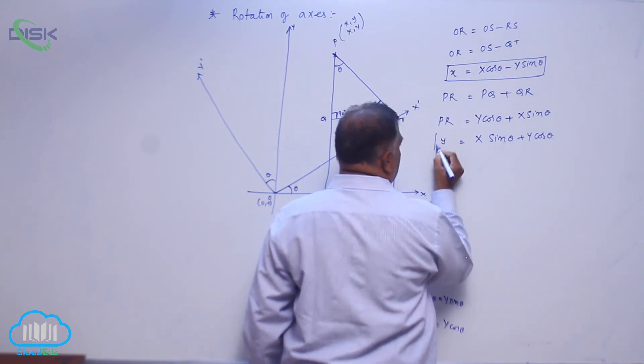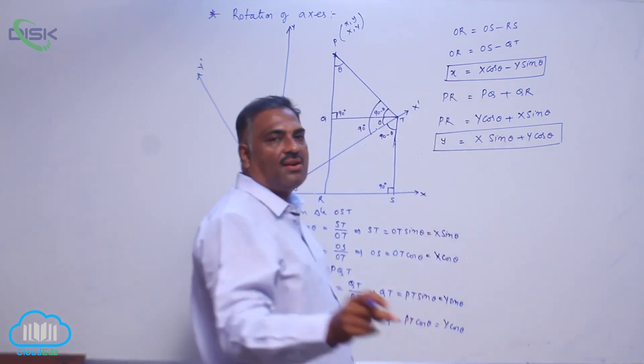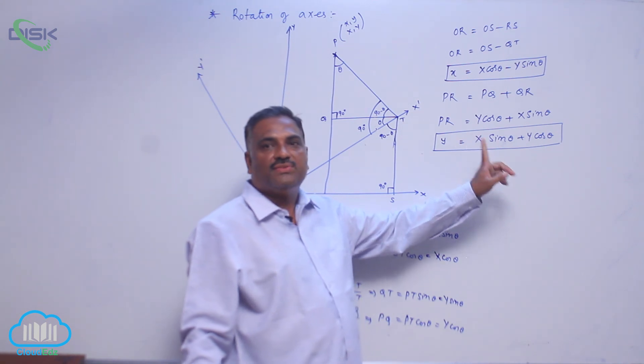Now you can see very clearly these are the two equations: small x in terms of capital X, Y, and theta; small y in terms of capital X, Y, and theta.